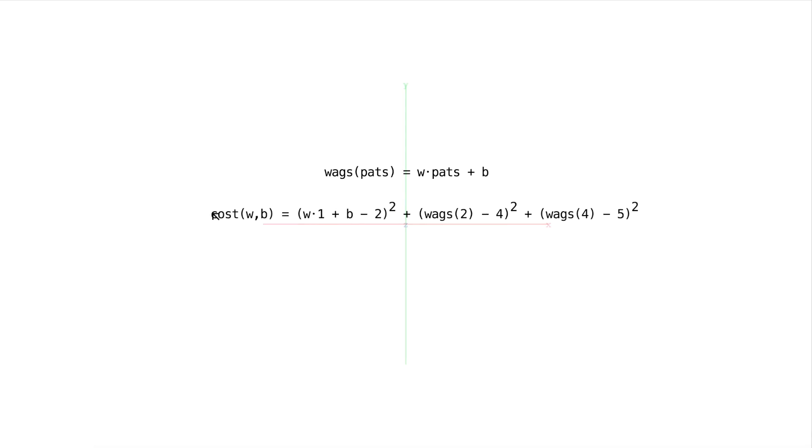And so I'm going to do that now, but I'm going to do it inside of our cost function, and really I'm just simplifying this by replacing this function call with its definition, and replacing the input with what it is here. So over here we're going to have w times 2 plus b, and over here we'll have w times 4 plus b.